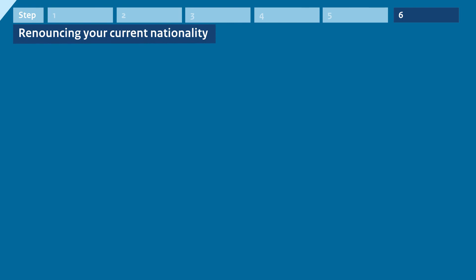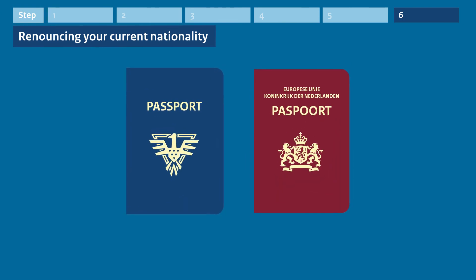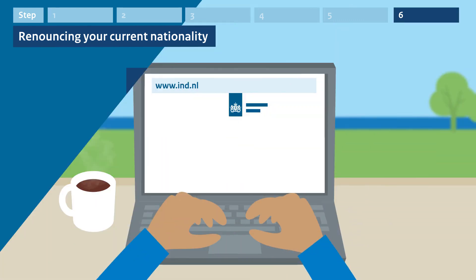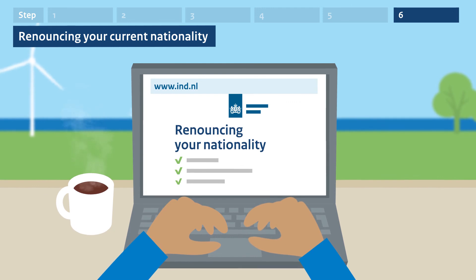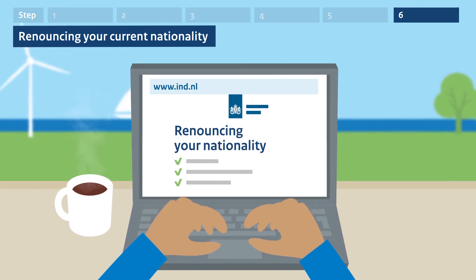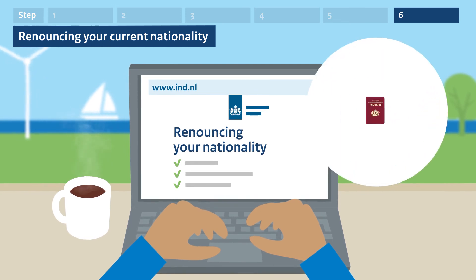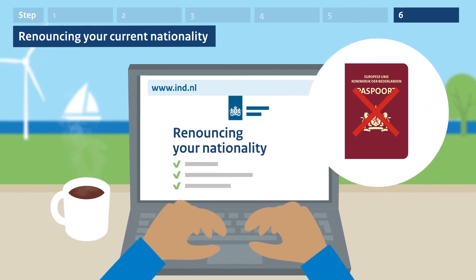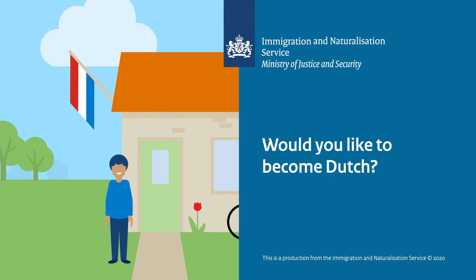Step 6. Renouncing your current nationality. If you become Dutch, you usually need to renounce the nationality you now have. This means that you give up your nationality. You can find out how this works on our website. Make sure you understand this before you apply for naturalization. If you don't renounce your current nationality after becoming Dutch, you may lose your Dutch nationality. Would you like to become Dutch?